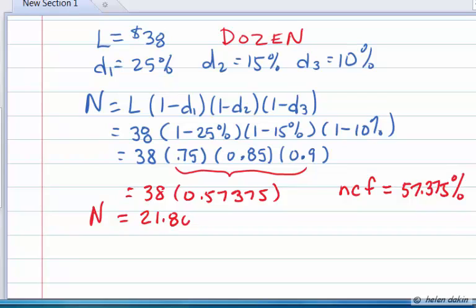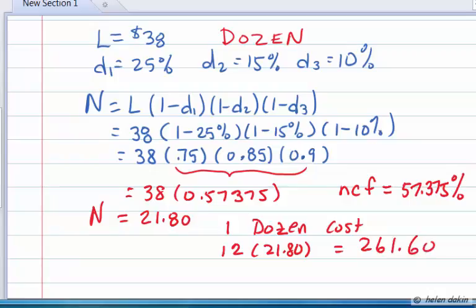Now, we have purchased one dozen of these chairs, so one dozen chairs will cost 12 times $21.80, or in other words, our total net cost will be $261.60 for the dozen chairs.